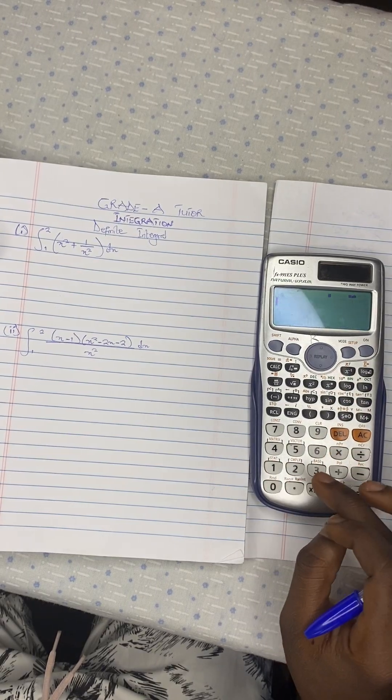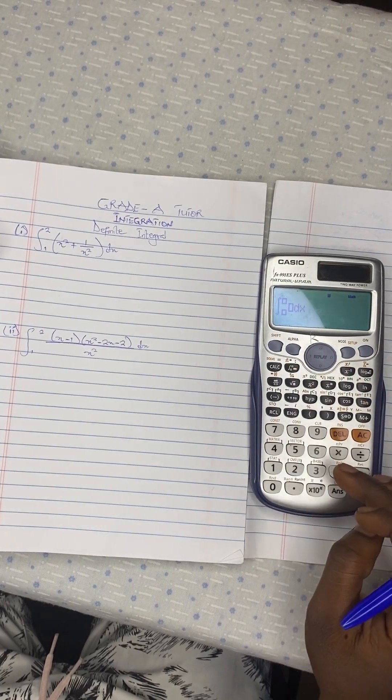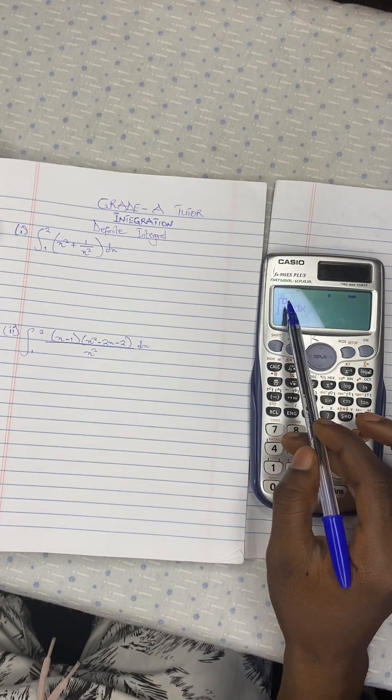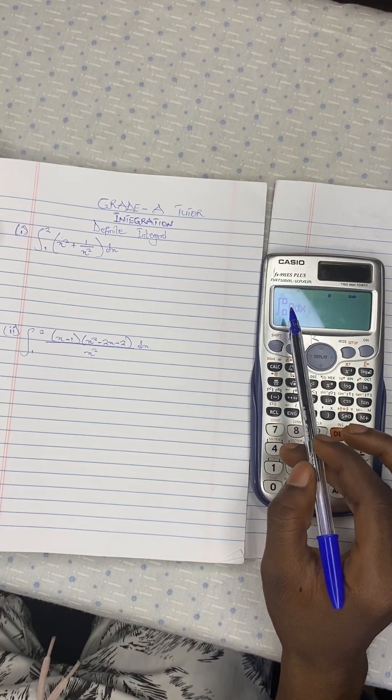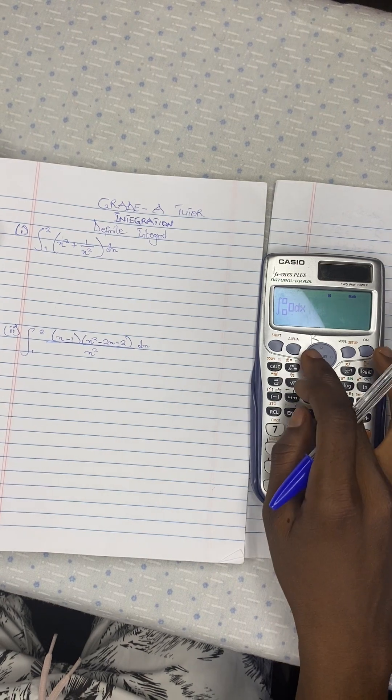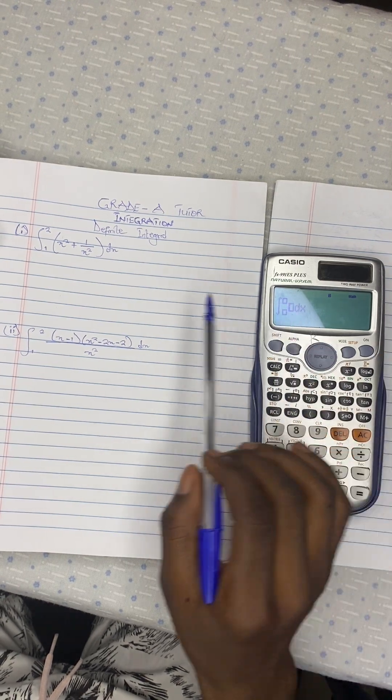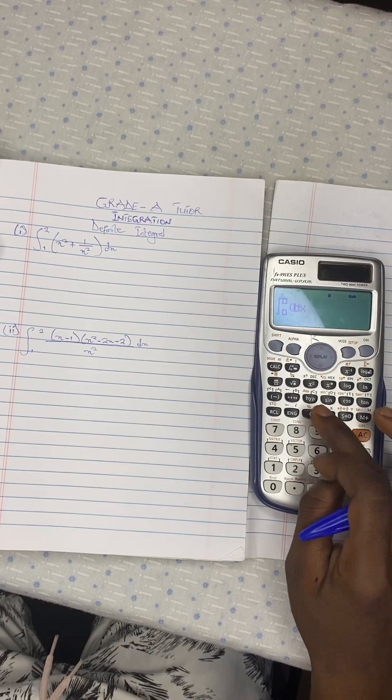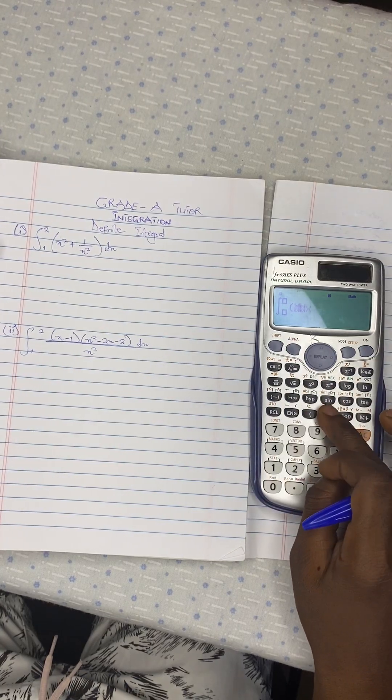Shift one, okay, so we press here. All right, so now that is integral value of the upper limit, lower limit, and the function. So what is the function? We have x squared, let's open brackets, x squared.